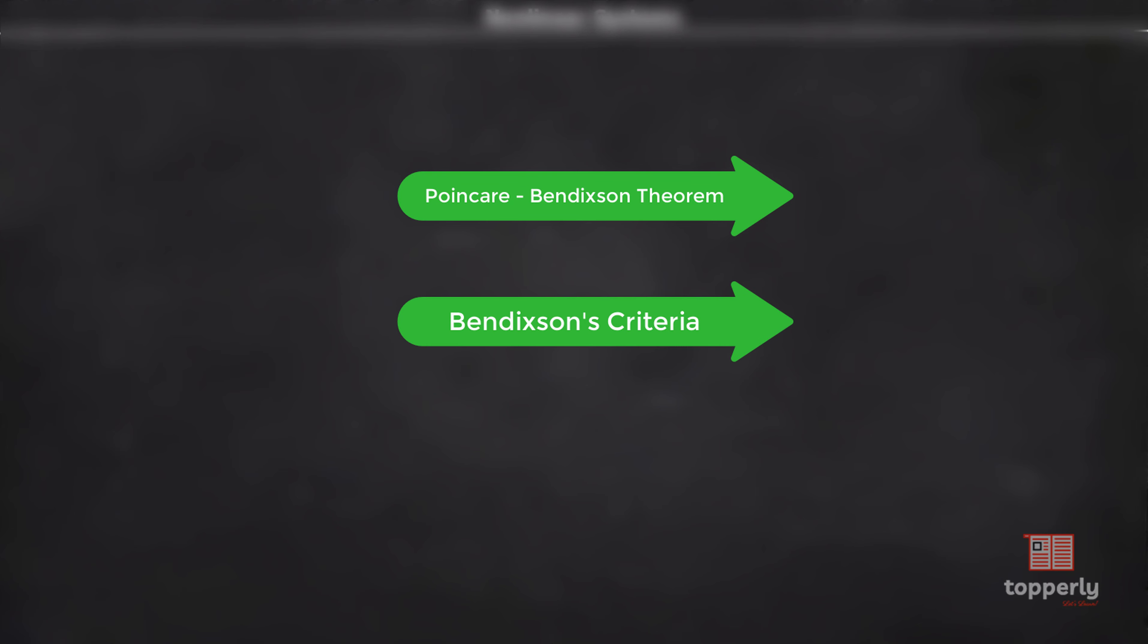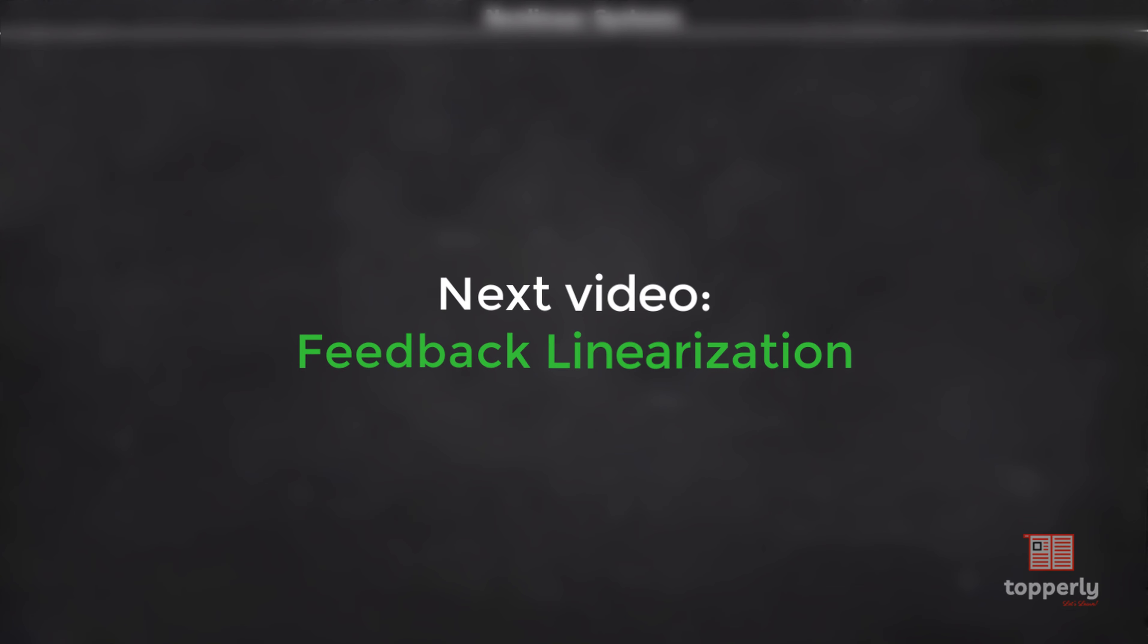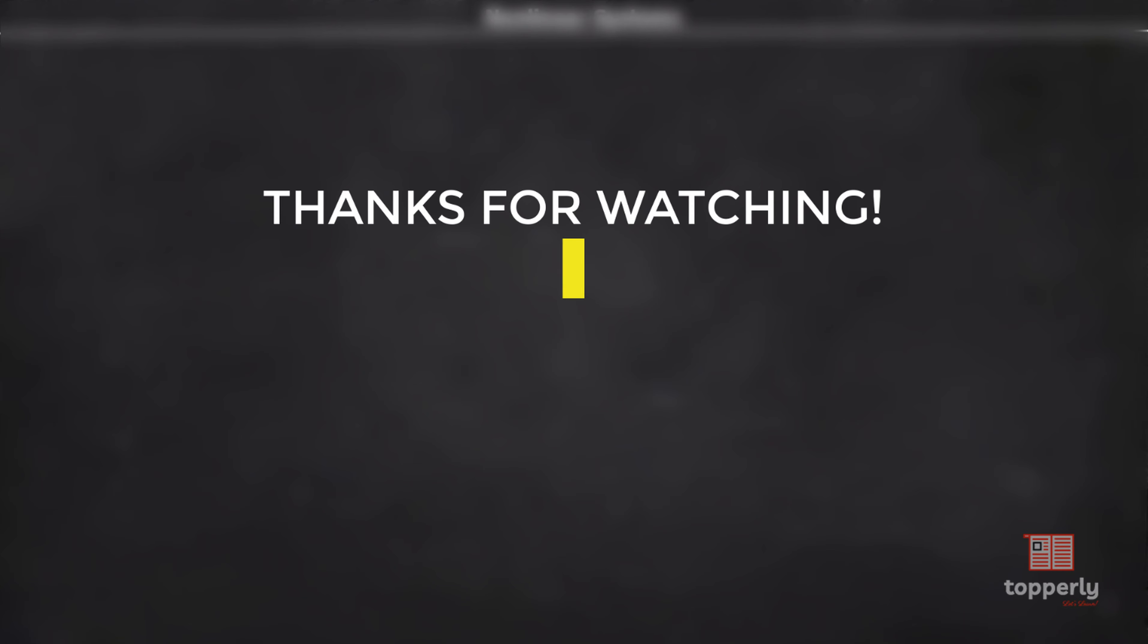So Poincaré-Bendixson theorem implies that chaos can never occur in the phase plane. That's all for this lecture. As a review of what we have studied in this video, firstly we discussed Poincaré-Bendixson theorem, followed by Bendixson's criteria to check for the absence of limit cycles, which we also implemented in an example question. If you found the lecture useful, please like the video and also support us by subscribing to the channel. In the next video, we will discuss feedback linearization. Thanks for watching and happy days.